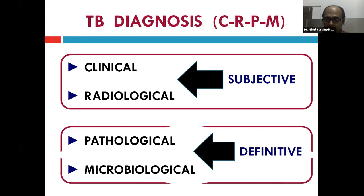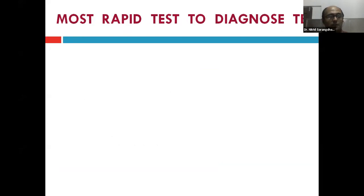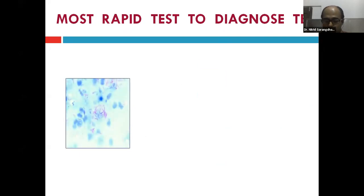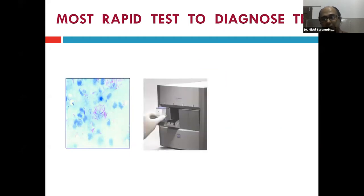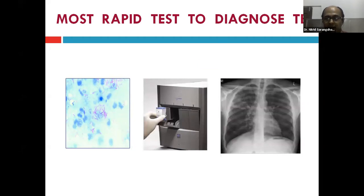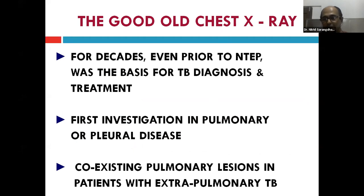Which is the most rapid test to diagnose TB? Sputum smear for acid-fast bacilli, CB-NAAT or GeneXpert, or the chest X-ray? The chest X-ray is fastest — you instantly get a presumptive diagnosis. For decades it was the basis for TB diagnosis and treatment. Chest X-ray remains the first investigation of choice in any suspected pulmonary or pleural disease and can help assess co-existing pulmonary lesions in extrapulmonary TB.